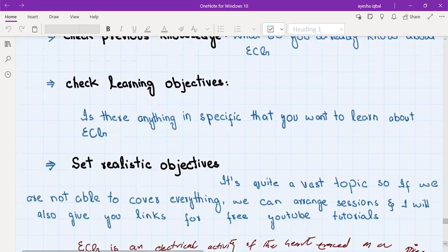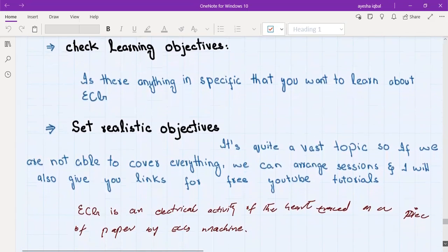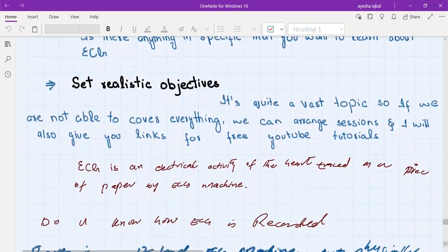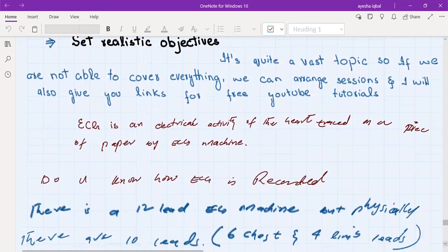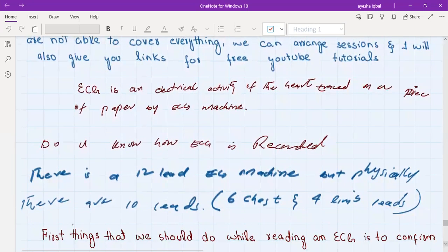After this we will set our teaching objectives. We will tell the student that ECG is quite a vast topic. So if you are not able to cover everything today then we can arrange further sessions as well if you like, and I will also give you some links and references for free YouTube tutorials or some books. First of all, let's discuss the definition of ECG. ECG is basically the recording of electrical activity of the heart on a piece of paper by an ECG machine.